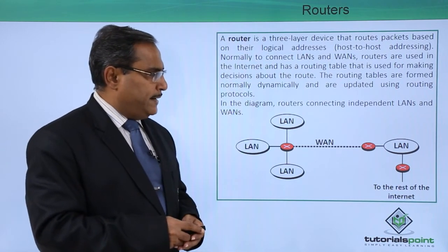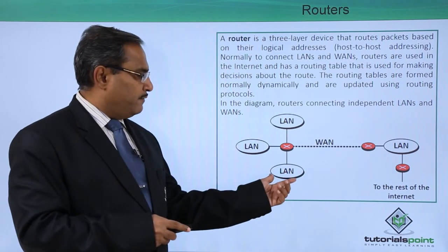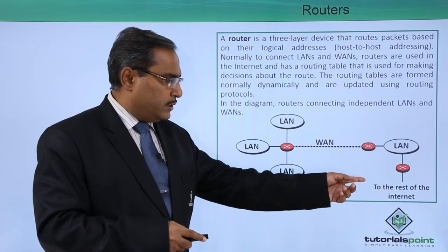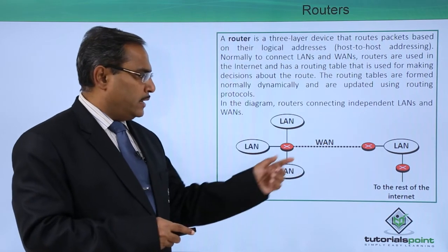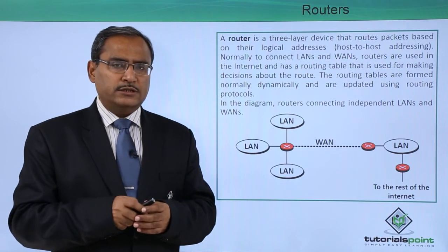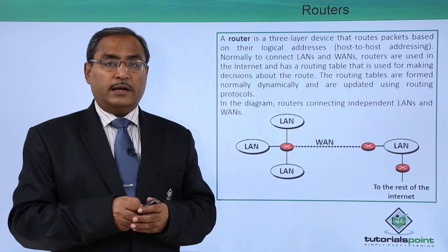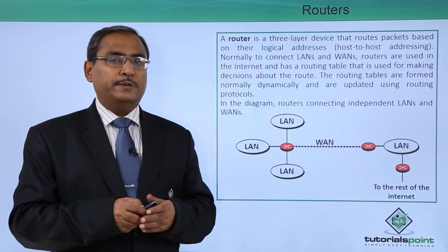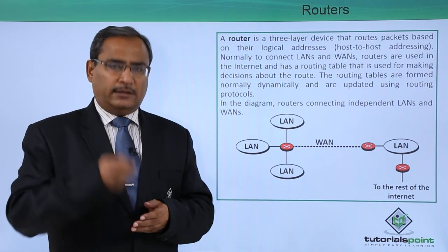In the diagram, routers connecting independent LANs and WANs are shown here. You can find that LANs are connected with this particular router. There is another LAN connected to the rest of the internet, and two routers are working in between. In this way, we have shown what a router is and what the basic functionalities of the router are. How routing tables are formed and how they are created dynamically will be discussed in other videos.